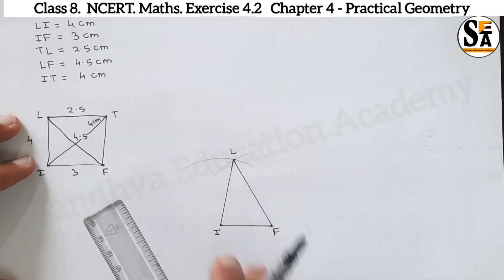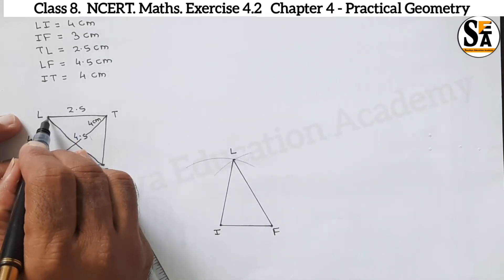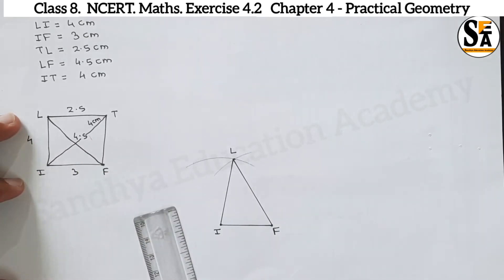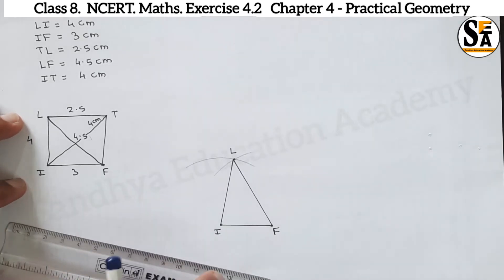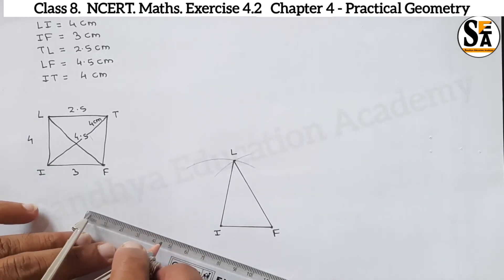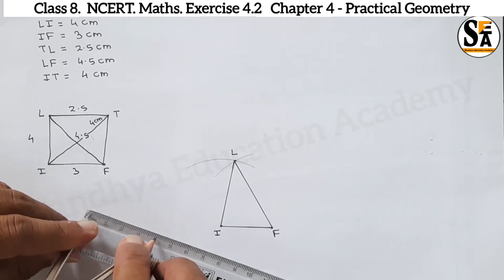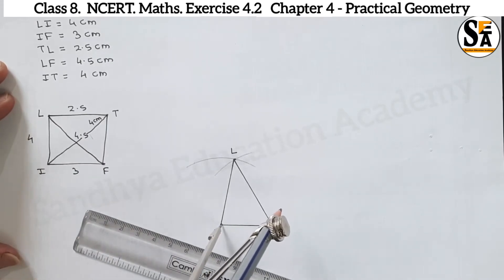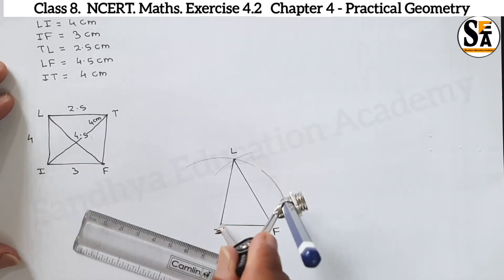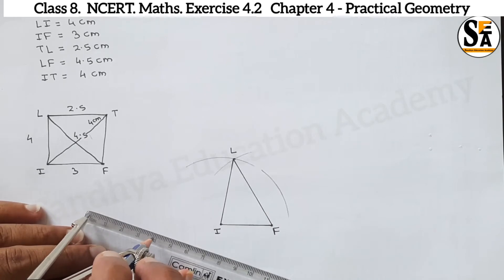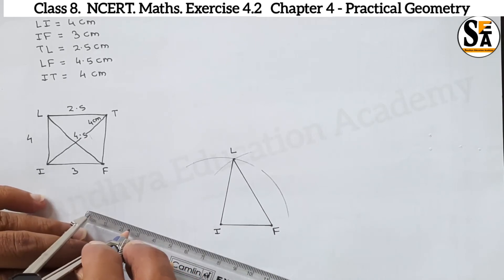Now we will locate point T, which is 2.5 cm away from point L and 4 cm away from point I. So again we will make two arcs — an arc of 2.5 cm and an arc of 4 cm. Make the arc of 4 cm from point I.